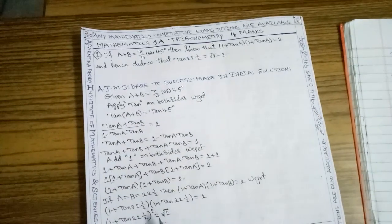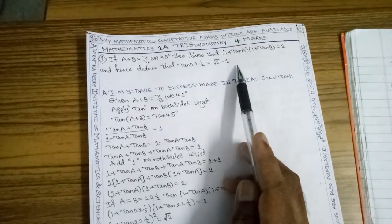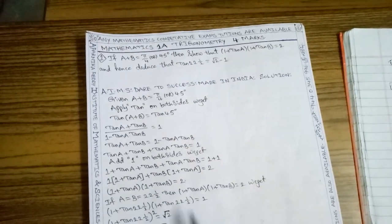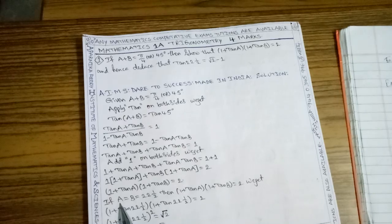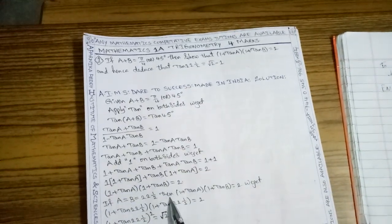So we've proved the answer. Coming to the second part, to find tan 22.5 degrees equals root 2 minus 1. In this step, we substitute A equals B equals 22.5 degrees.